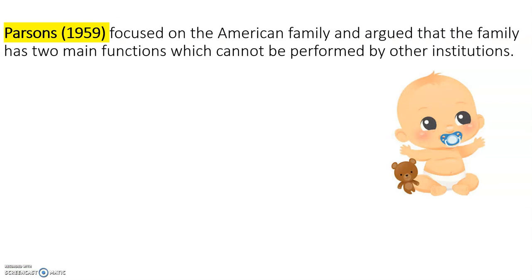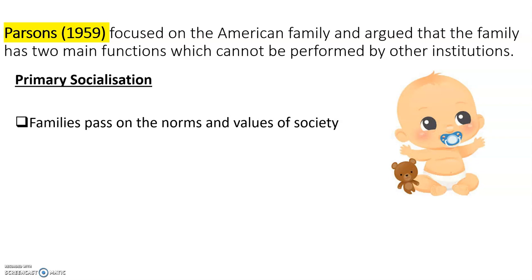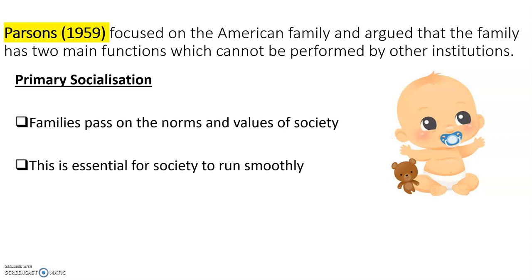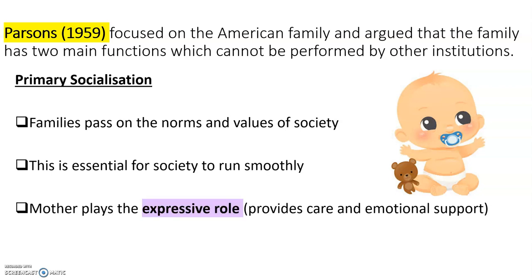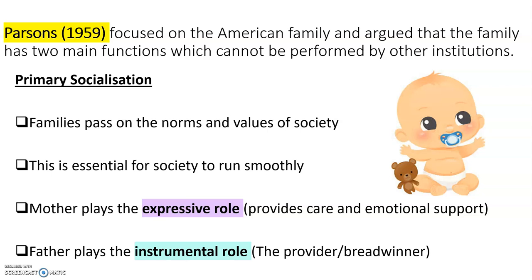Parsons argued that the family has two main functions that cannot be done by any other institution in society. The first is that the family passes on norms and values through primary socialisation, which is essential for society to run smoothly. He argued the mother provides an expressive role - doing all the caring, emotional, and nurturing work - while the father plays the instrumental role, providing financial support, which he called the breadwinner.